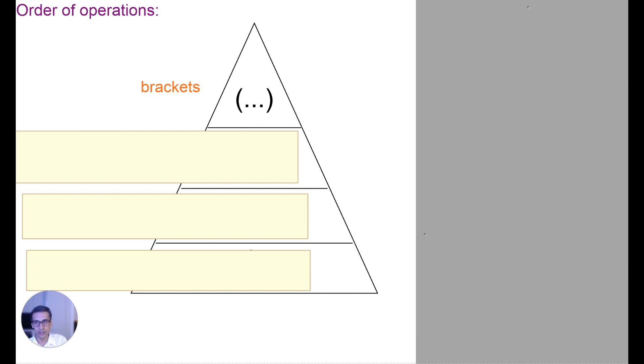The second thing you want to look at is indices. So indices are things like when you have 7 squared or 5 cubed. So 7 squared is 7 times 7, 5 cubed is 5 times 5 times 5, or even square roots. So the